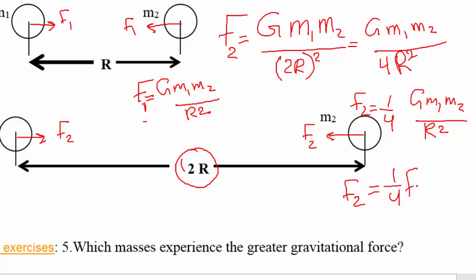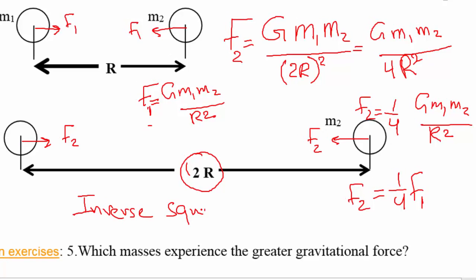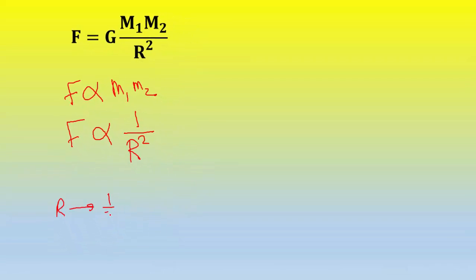Meaning when we double the distance between the two objects, the force of gravity decreases by 1/4. That is what we call the inverse square law. The inverse square law states that whatever factor you multiply the distance by, you multiply the force by the inverse square of that factor. So if we change the distance from r to (1/2)r, what will happen to the force?